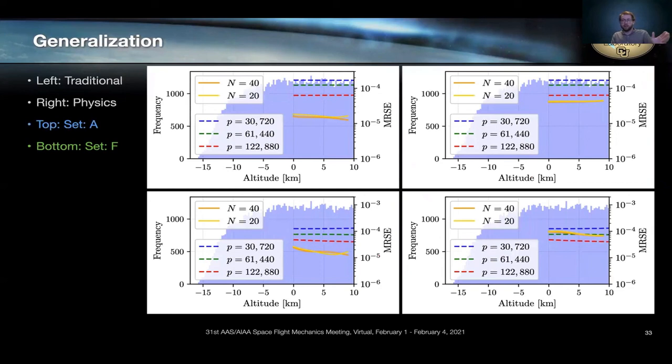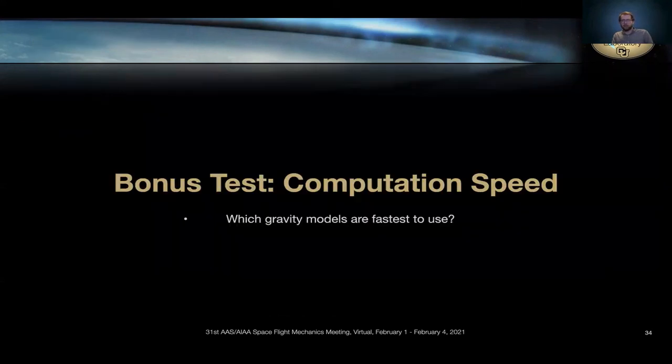Similar stories for the generalization. In this case, the neural networks consistently outperform the polyhedral model. And then as a little extra test, we look at how fast these models are to evaluate. They seem to have advantages in compactness and generalization and regression, but can you actually use them in practice? Are they efficient enough to run? And the results are encouraging.